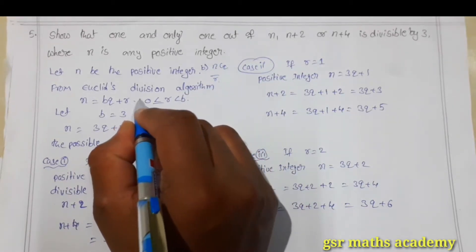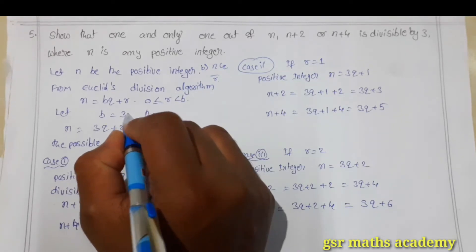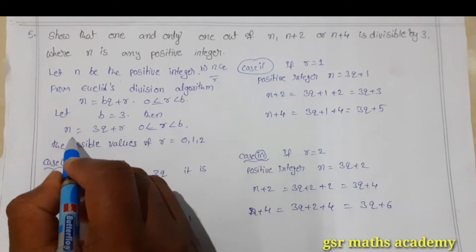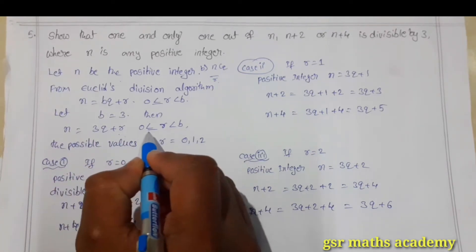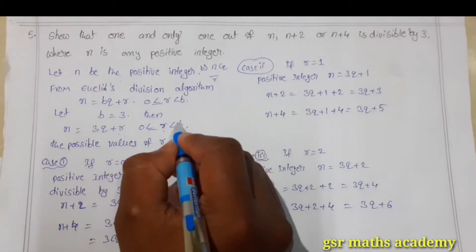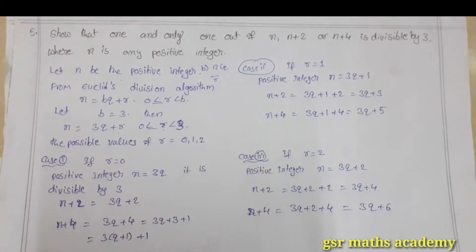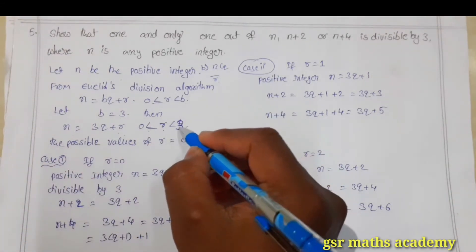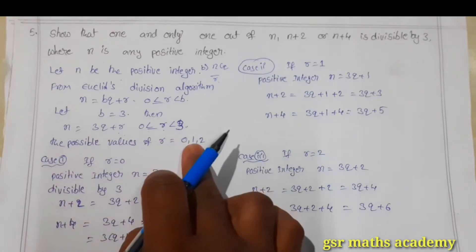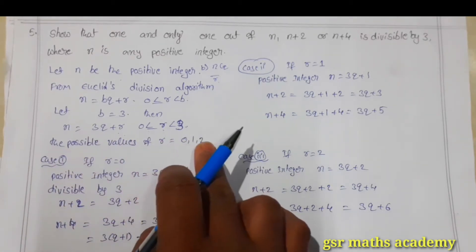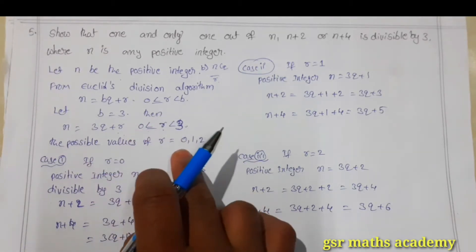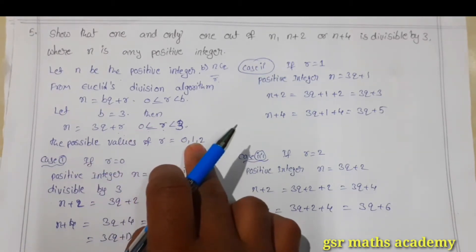Now, if I suppose b is equal to 3, then our positive integer n can be written as 3q plus r, where 0 is less than or equal to r, less than 3. So the possible values of r are 0, 1, or 2. There are 3 possible values for r: 0, 1, or 2.